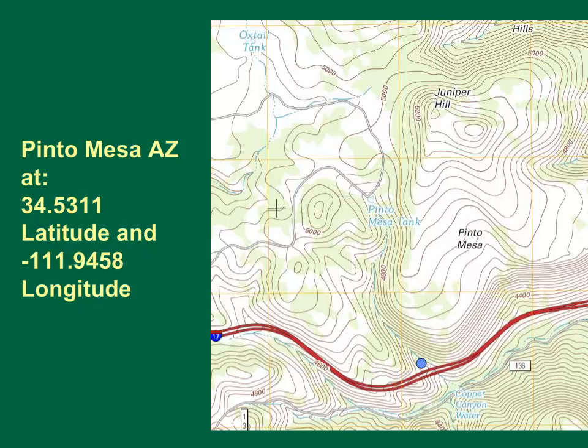Here is one class exercise. Try to delineate the basin for the stream crossing Route 17. This site is at Pinto Mesa in Arizona. The latitude is 34.5311 and the longitude is minus 111.9458.